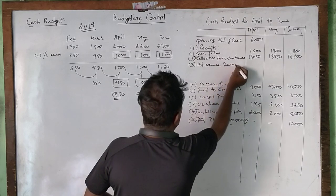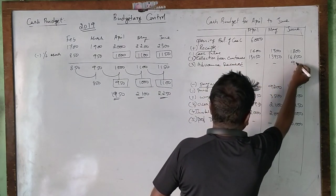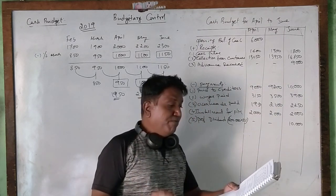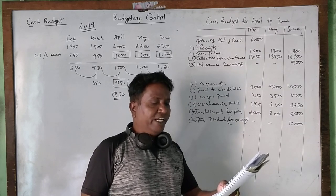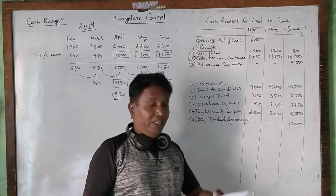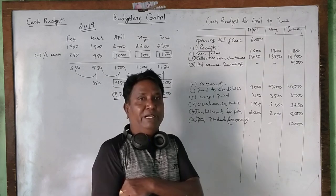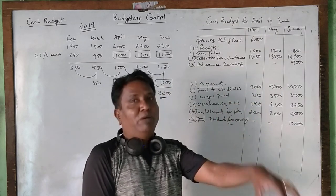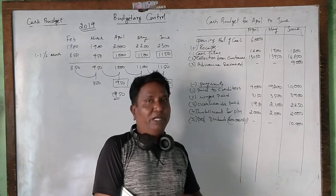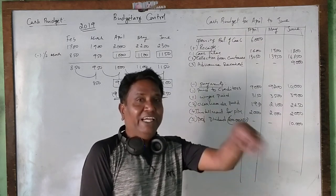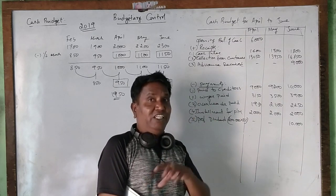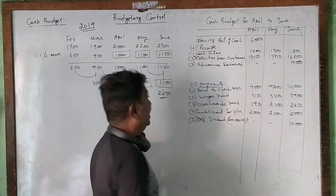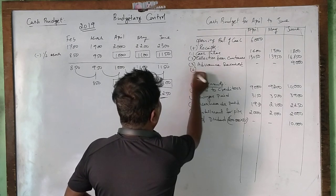Dividend from investment amounting to 1,000 rupees is expected to be received in June. This is dividend income from investments — 1,000 rupees to be received in June.